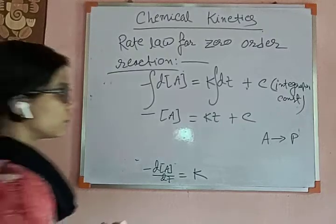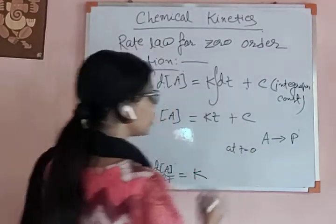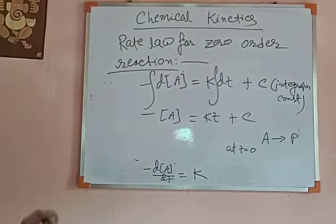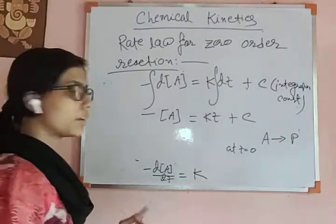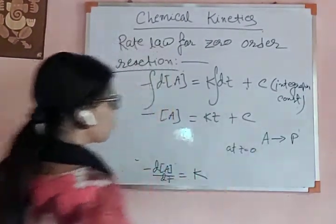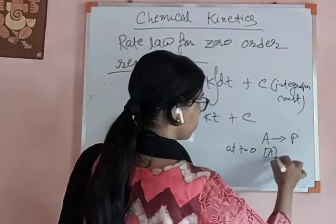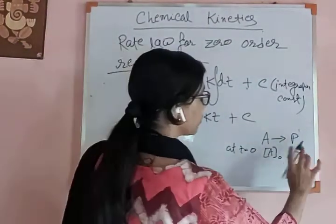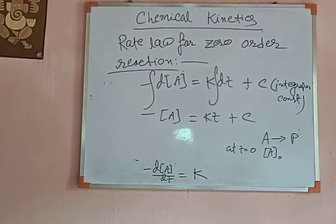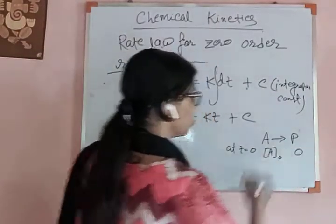At T equal to 0 — meaning when the reaction just started, at 0 minutes or 0 seconds — the reactant concentration is A₀. This is the initial state. When the reaction has just started, no product has been produced, so product concentration is 0.